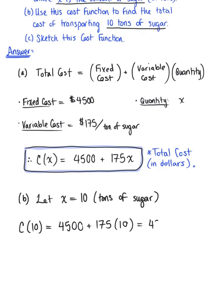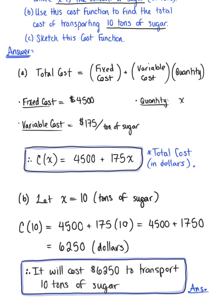So we have $4,500 plus $1,750. So adding those two up, this leaves us with a final answer of $6,250. And remember, this is for the cost, so this is in dollars. Or in other words, it's going to cost $6,250 to transport 10 tons of sugar.